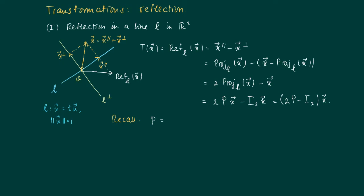Recall that the projection matrix for the projection on a vector u is given by 1 over (u₁² + u₂²), with u₁² and u₂² on the diagonal, and u₁u₂ on the anti-diagonal.